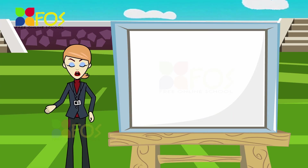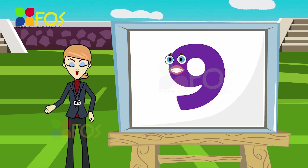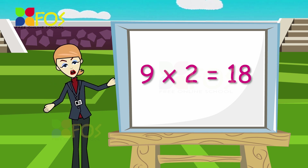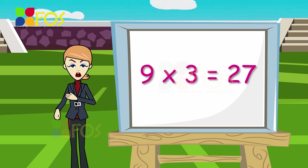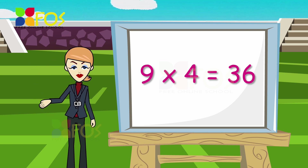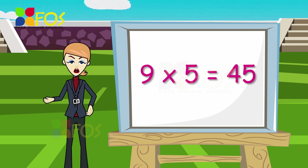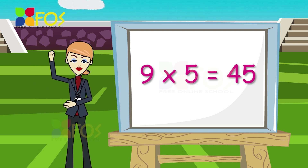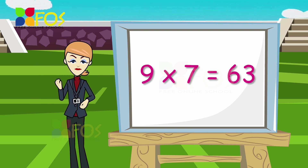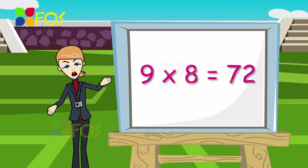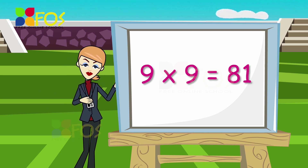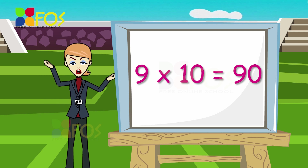Here is the table of 9. 9 1s are 9, 9 2s are 18, 9 3s are 27, 9 4s are 36, 9 5s are 45, 9 6s are 54, 9 7s are 63, 9 8s are 72, 9 9s are 81, 9 10s are 90.